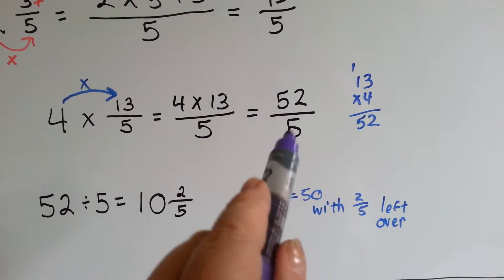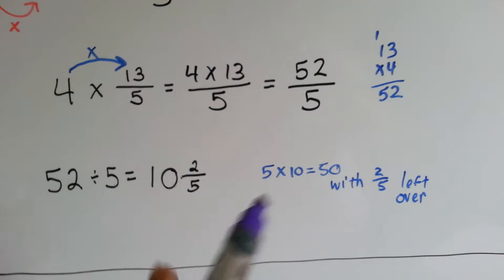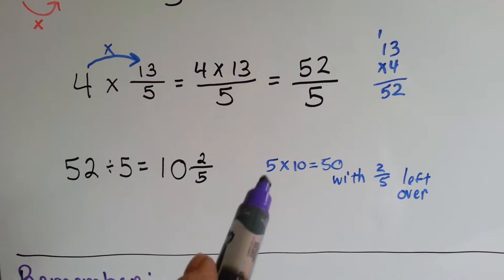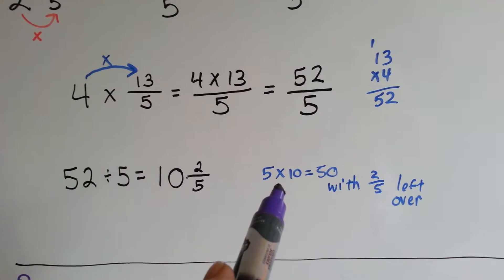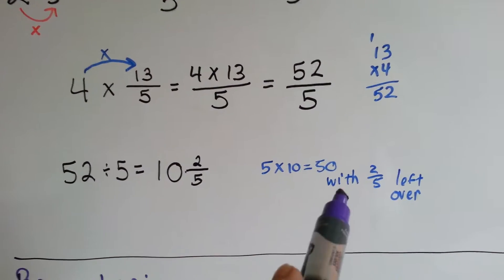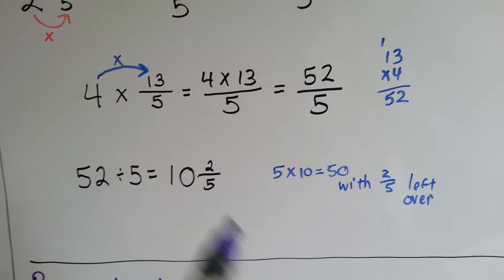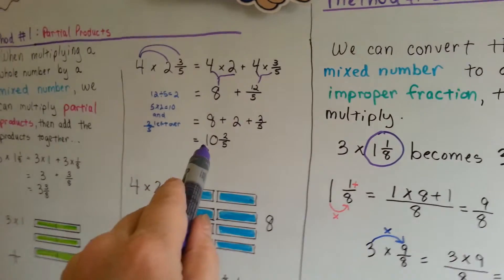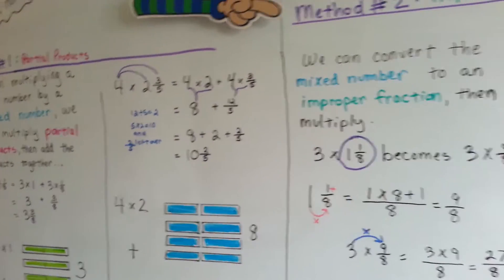We can't leave it as 52 fifths — we need to reduce it. How many times does 5 fit into 52? We know 5 times 10 is 50, which gets us very close. There's just a little 2 fifths left over. So our answer is 10 and 2 fifths — the same answer as before.